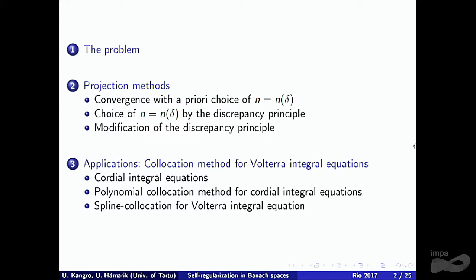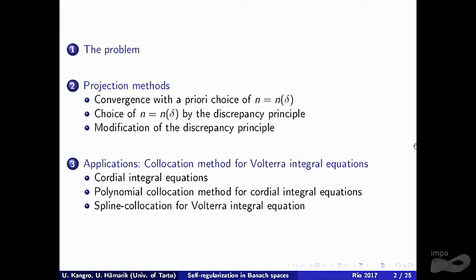The outline of my talk is the following. First I set up the problem, then I talk about projection methods for solving this, and I discuss self-regularization — choosing the dimension of the projection space in dependence of the noise level of the data. I also talk about choice by the discrepancy principle and about a modification of the discrepancy principle in cases where the projectors are not uniformly bounded. And some publications and numerical results.